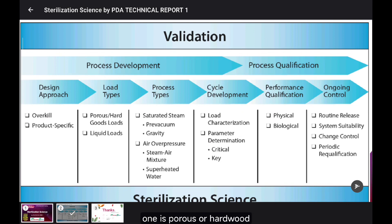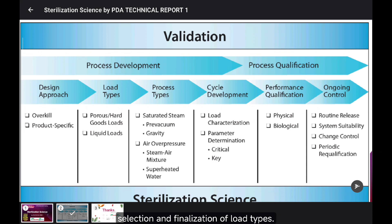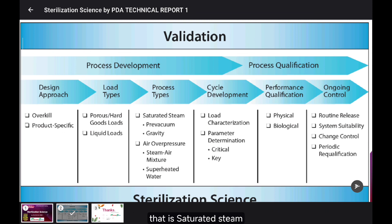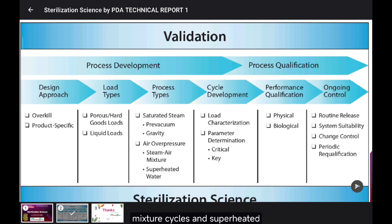After selecting the design approach, we need to finalize load types. The first one is porous or hardwood loads and the other is liquid loads. After selection and finalization of load types, we need to select the process type applicable for that particular load. For that load type, we select from different processes: saturated steam, pre-vacuum cycles, gravity cycles, air overpressure cycles, steam-air mixture cycles, and superheated water cycles.